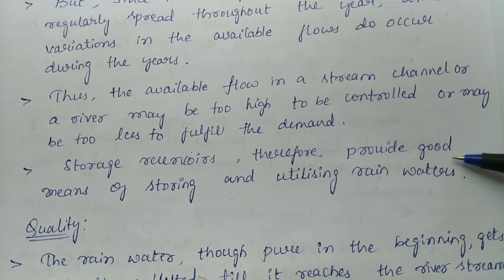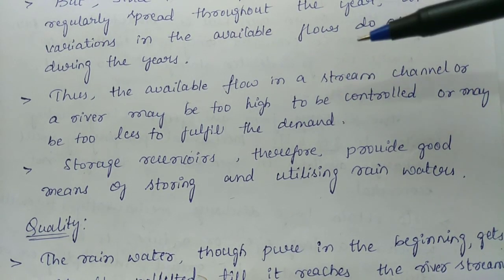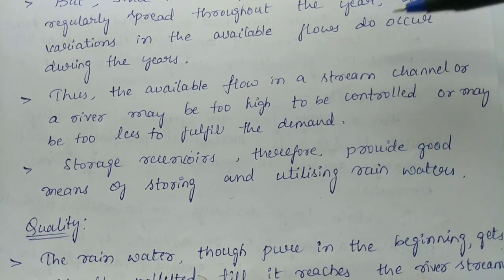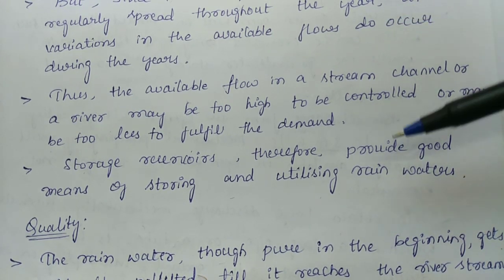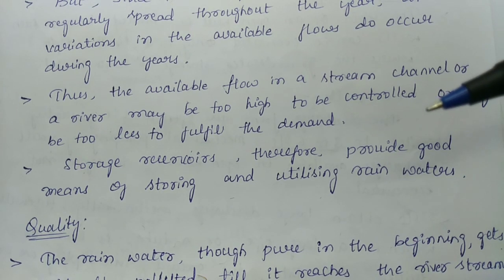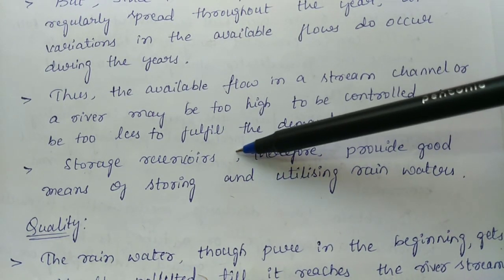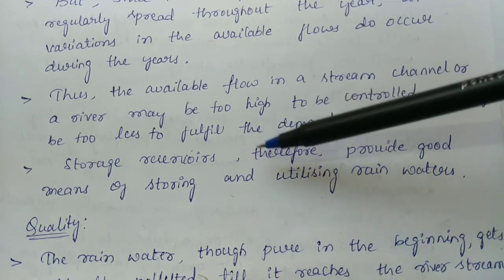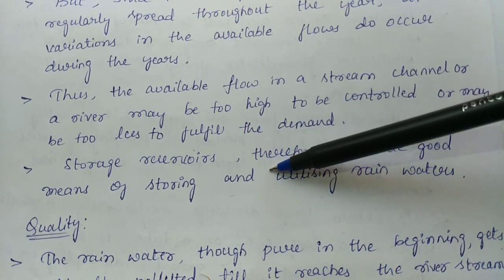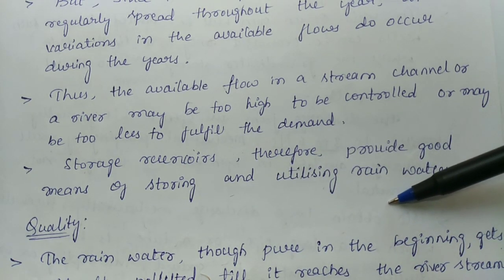During the rainy season the water collected in the river is more, creating devastating floods. In such times it is very difficult to control the floods, and even in summer seasons rivers go dry creating scarcity of water. That is why the best option for using river water or any surface water is by constructing a storage reservoir in the form of a dam or a barrier.